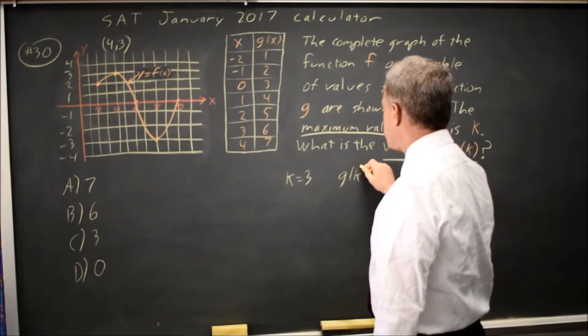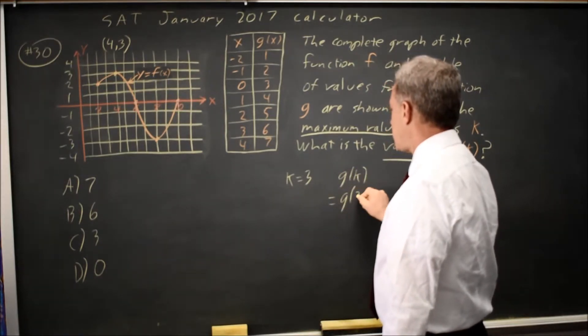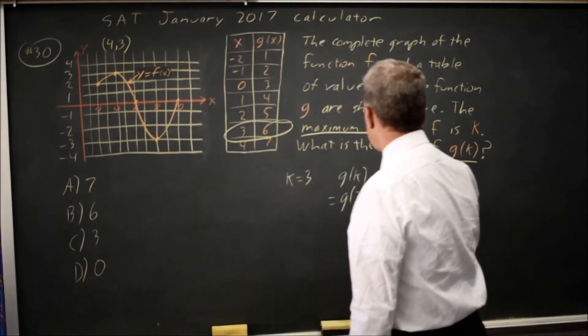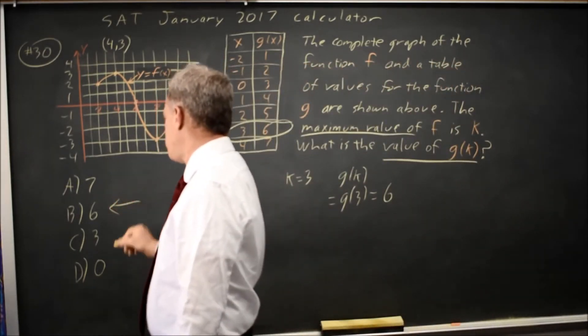Now g of k is equal to g of 3, and in our table, g of 3 equals 6. So that would be choice B.